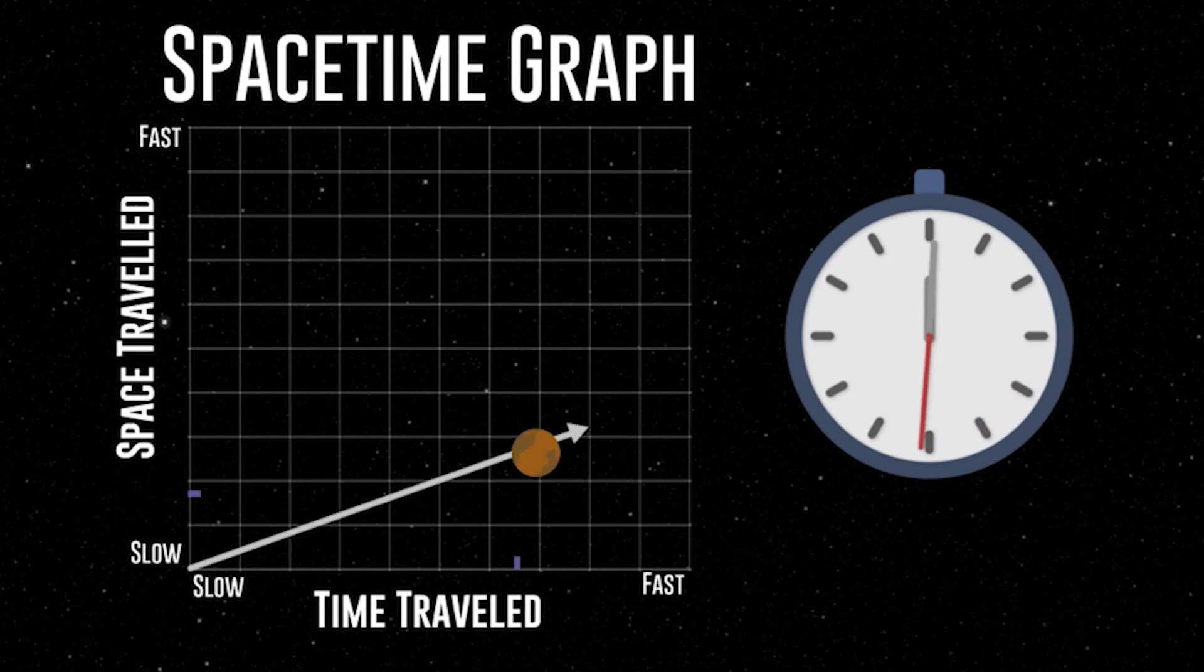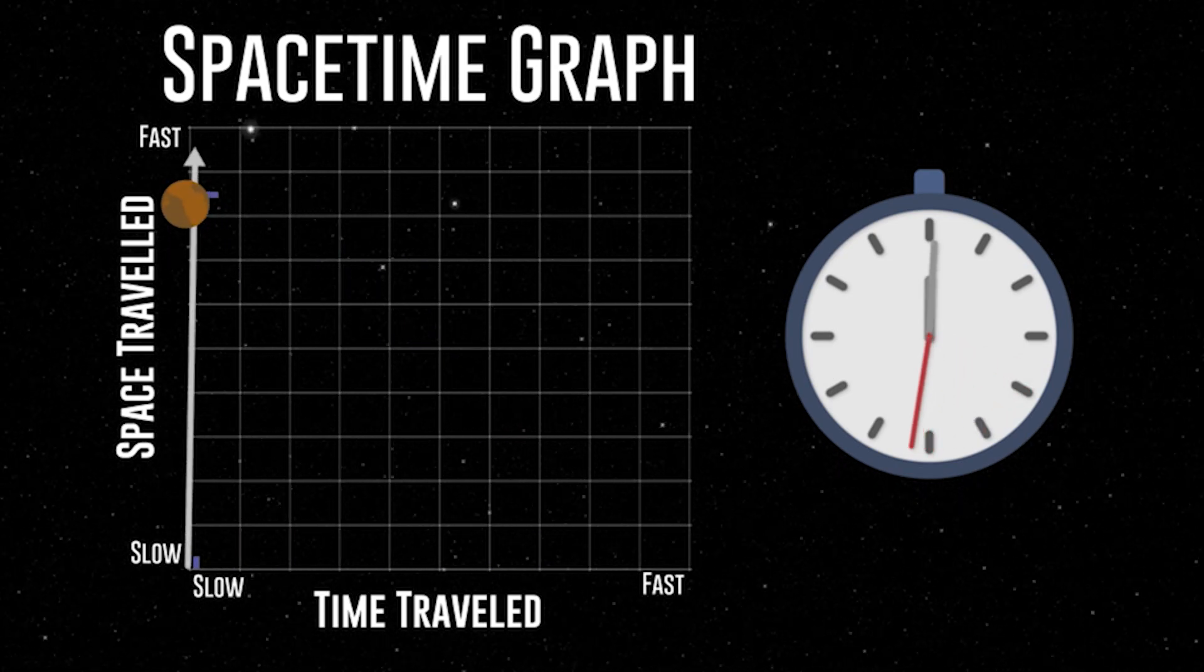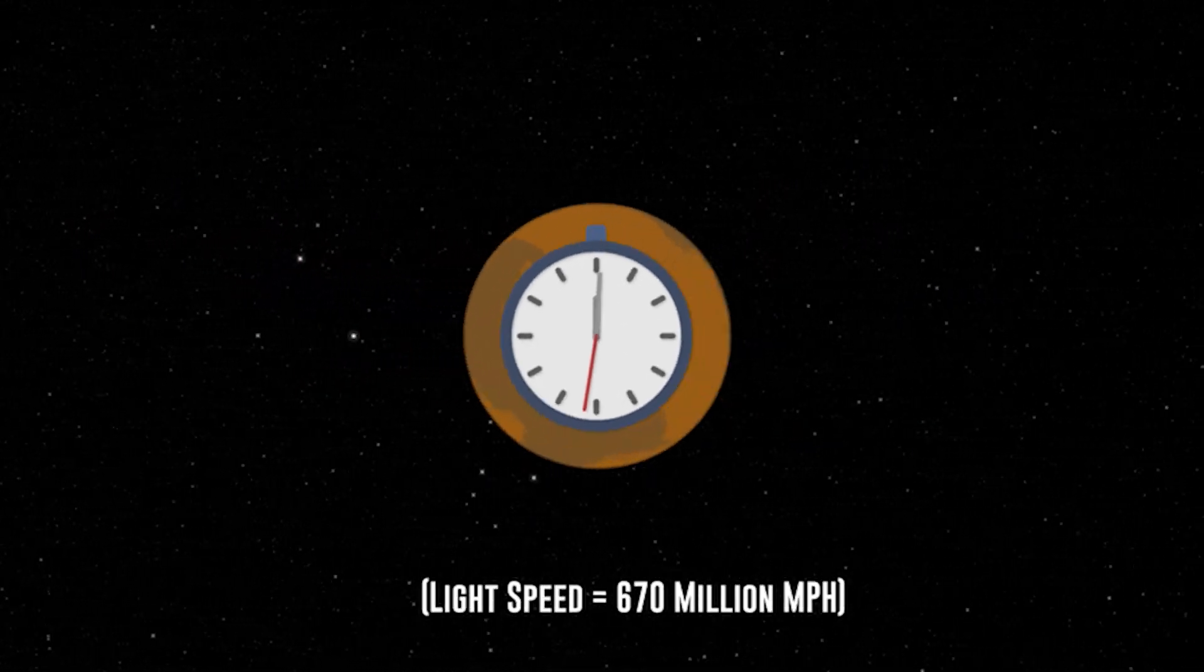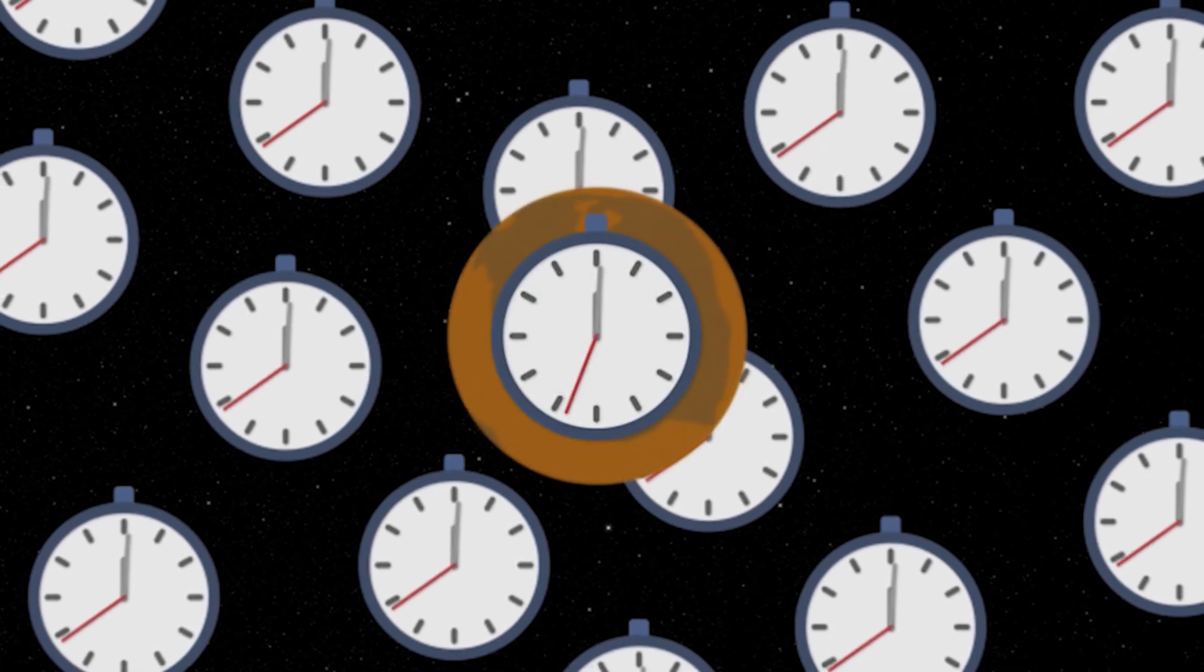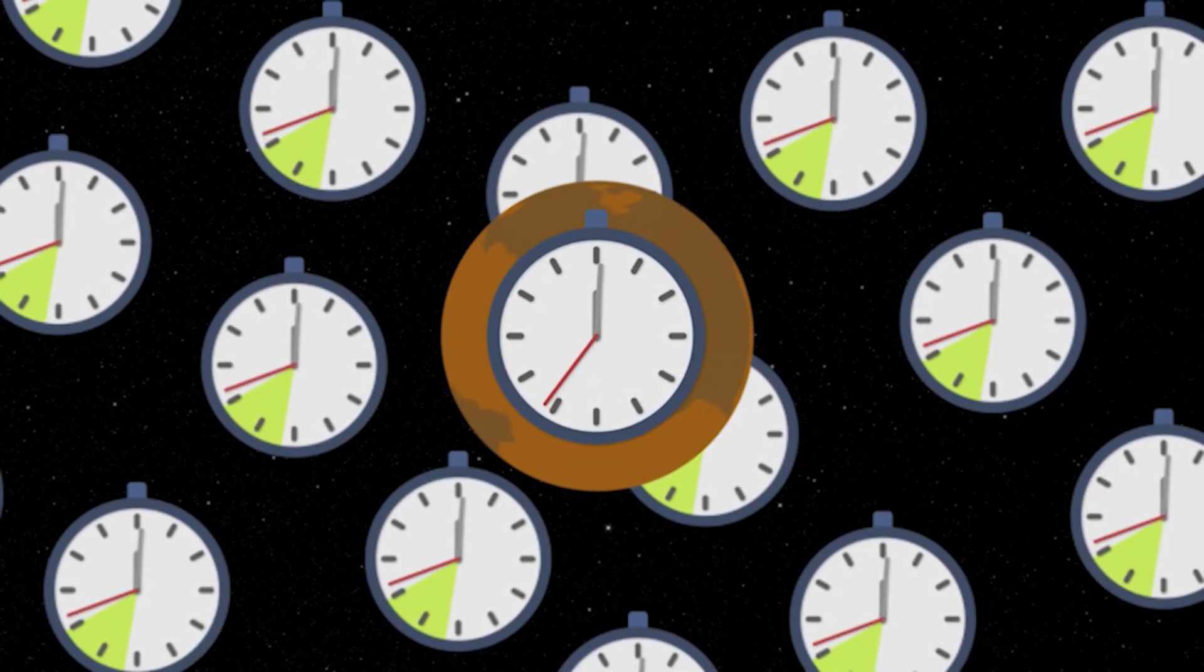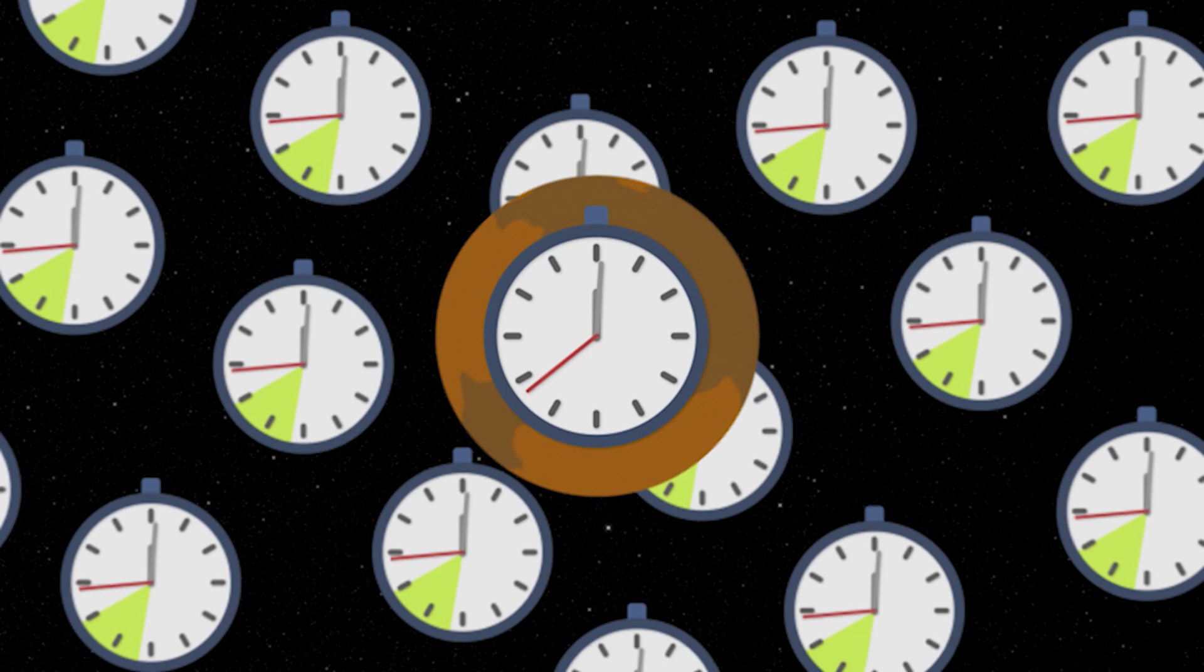This also means that if you moved at light speed, you'd time travel into the future because you'd be moving fast enough to stop the time relative to you while it continued to elapse everywhere else in space. When you slowed down or stopped moving, you'd perceive a jump to the future because you essentially just missed a portion of the time around you.